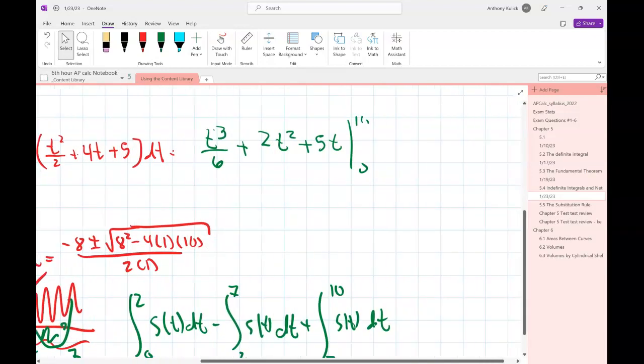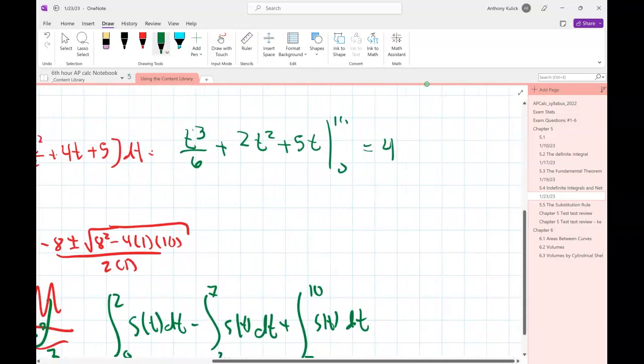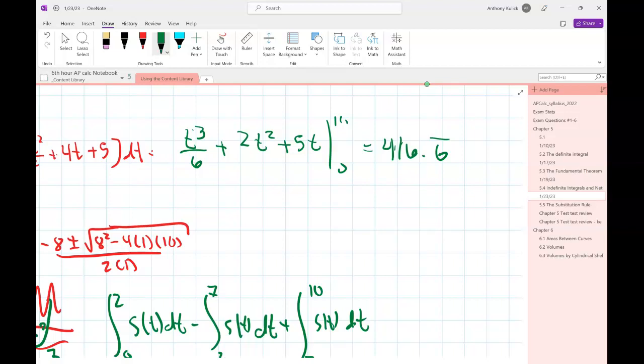And if you plug that in, I guess you get like 416.6 repeating is what the textbook says. I wasn't really interested in doing that. The nice part is though, that if you look, the zero doesn't really matter, right? Because all that stuff is just going to go to zero when you plug the zero in. So that part's nice at least. Okay.